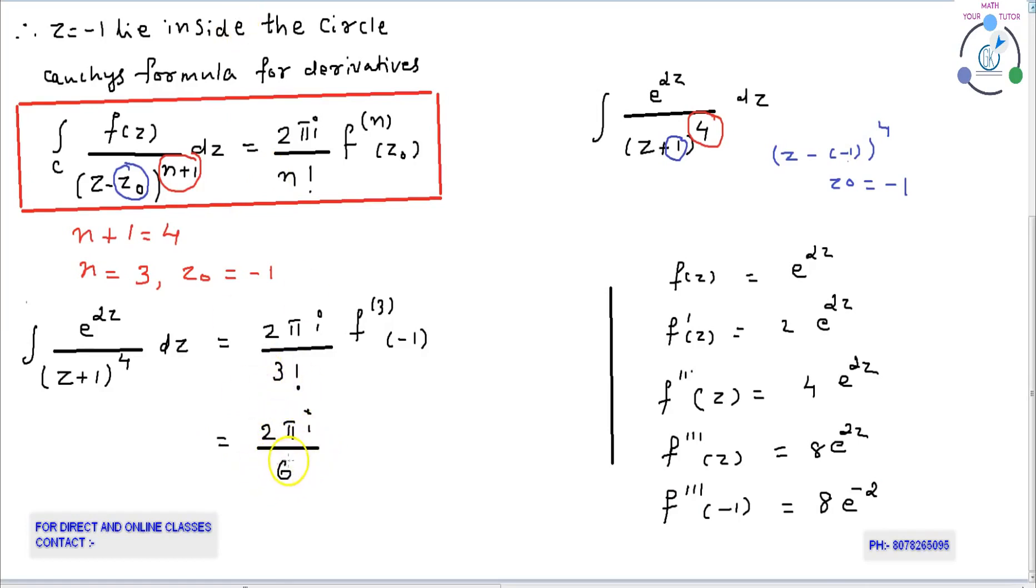The integral equals 2 pi i by 3 factorial, which is 6, into 8 e raised to minus 2. Cancelling 6 and 8, we get 8 by 3 pi e raised to minus 2 i.